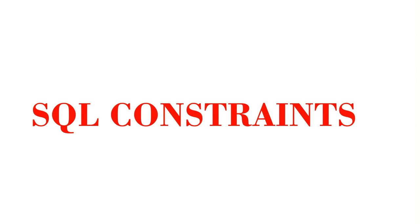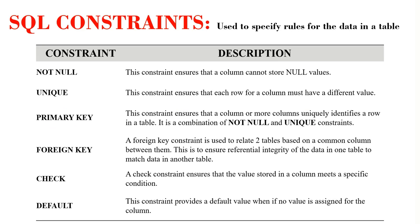Hi guys, this is Meena and welcome to my second video on SQL constraints. Constraints are used to specify rules for data in a table in order to restrict the data that can be entered into a table. This means that if we have a constraint on a column or a table and there is any violation of the constraint, then the data cannot be entered into the table — the action gets aborted. This is important in relational databases because it ensures the accuracy and reliability of the data entered in a table.